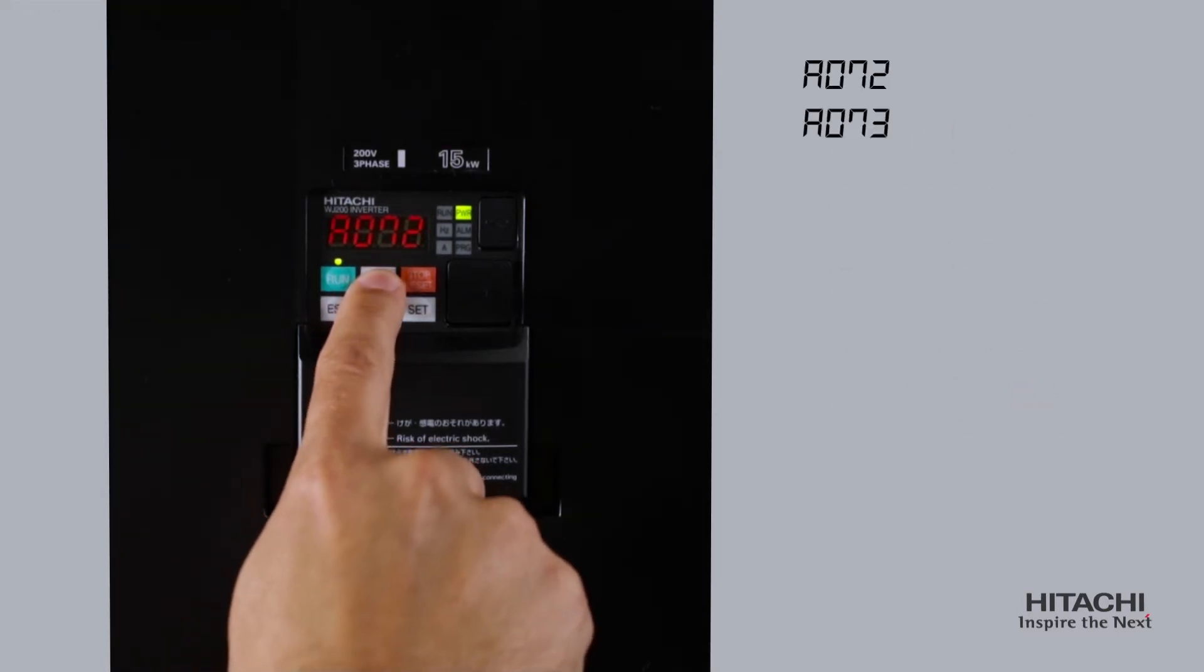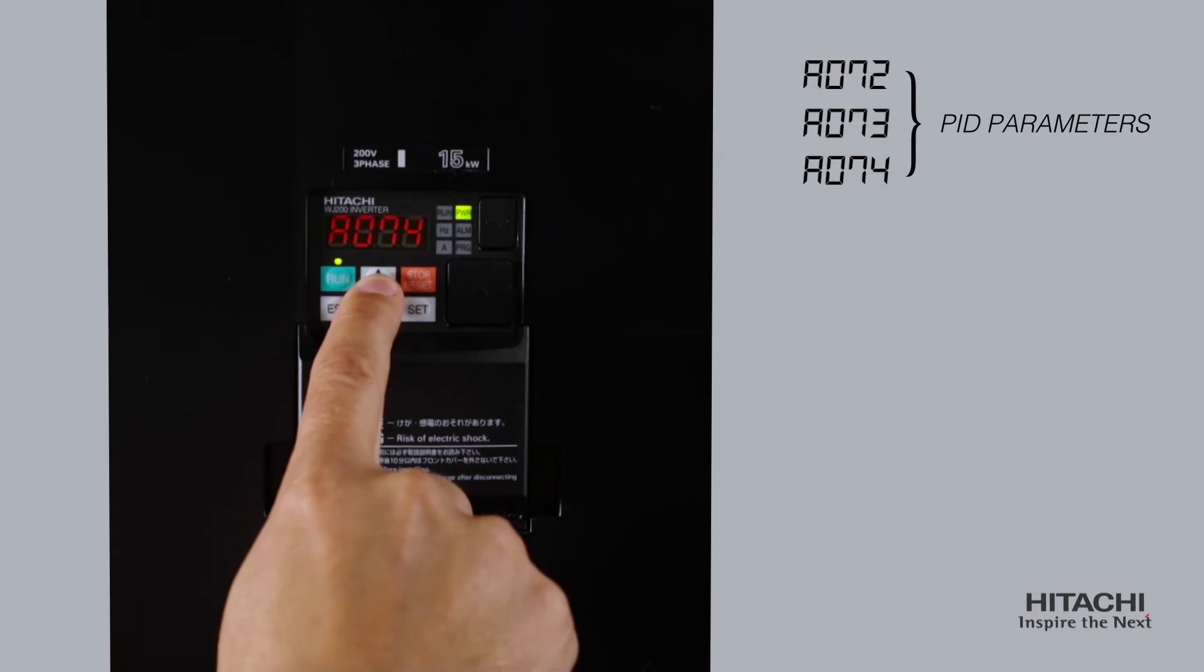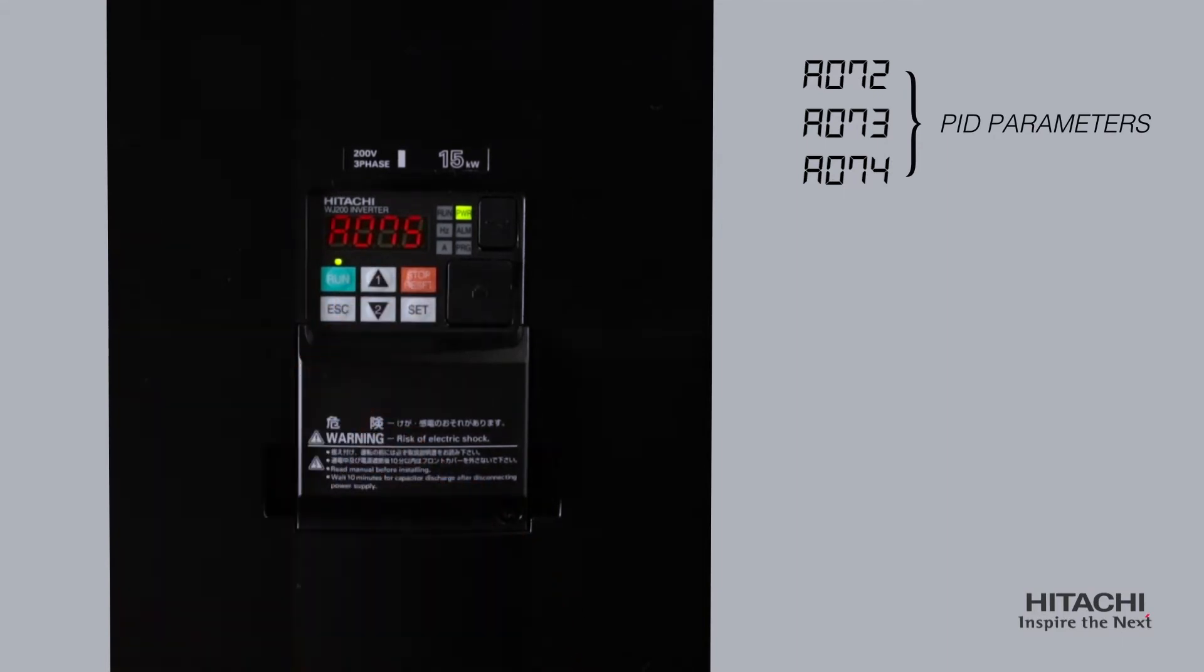A72, 73 and 74 are the PID parameters. These values will only need to be changed depending on the system performance requirements and response.